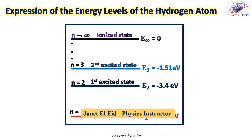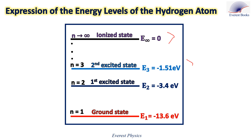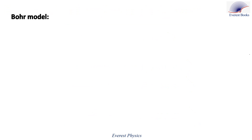In a previous episode titled 'Bohr Model of the Hydrogen Atom,' we identified the energy levels of the hydrogen atom. But where did we get these values? In this episode, we are going to determine the expression which gives the values of the energy levels using the Bohr model and the Rydberg formula.